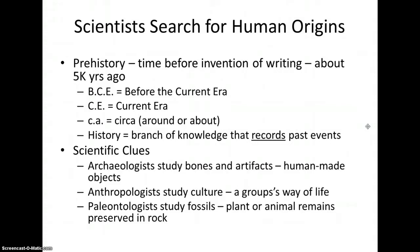History is the branch of knowledge that records past events. What we know about history and prehistory comes from the work of archaeologists, who study bones and artifacts — which are human-made objects — anthropologists, who study culture or one's way of life, and paleontologists, who study fossils from plant or animal remains that are preserved in ancient rock.